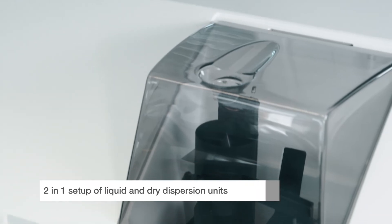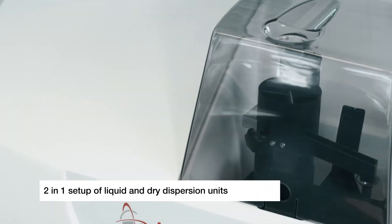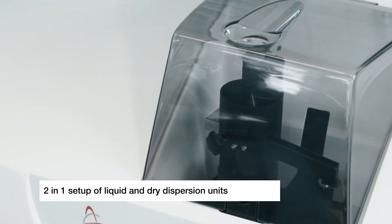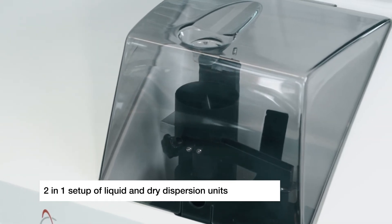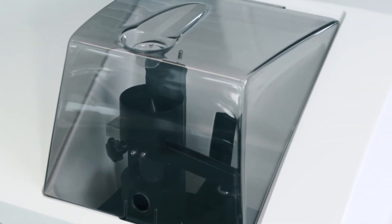To switch between a wet and a dry measurement, no instrument modification is needed. Both dispersion units are installed within the instrument and are ready to measure at any time, with the choice being done by a single mouse click.